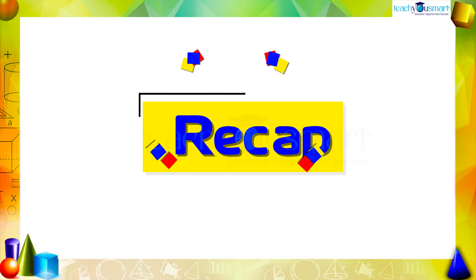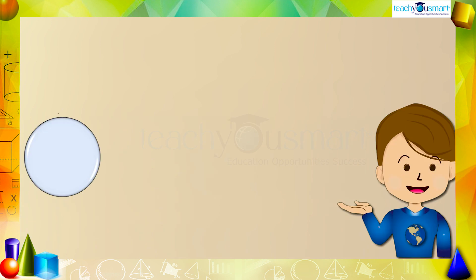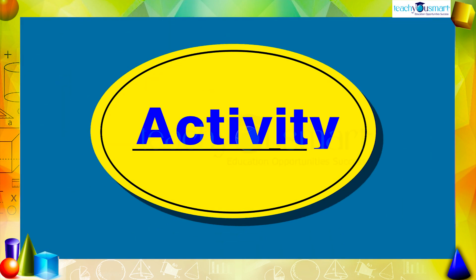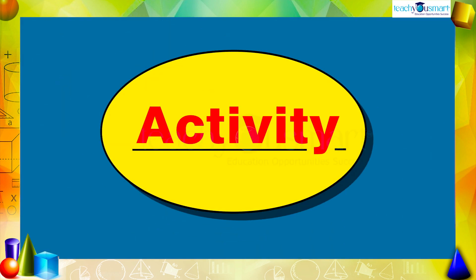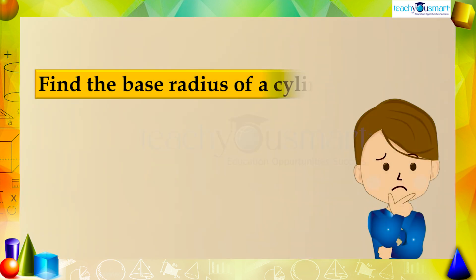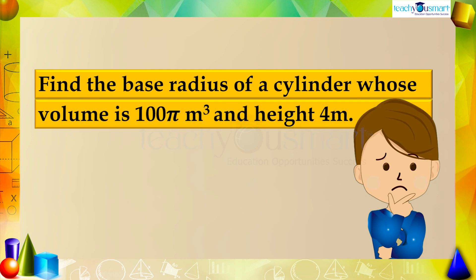Let's have a quick recap. Today we discussed that the volume of a cylinder equals πr²h. Before winding up, let's check how much you understood by doing an activity: find the base radius of a cylinder whose volume is 100π cubic meters and height is 4 meters.